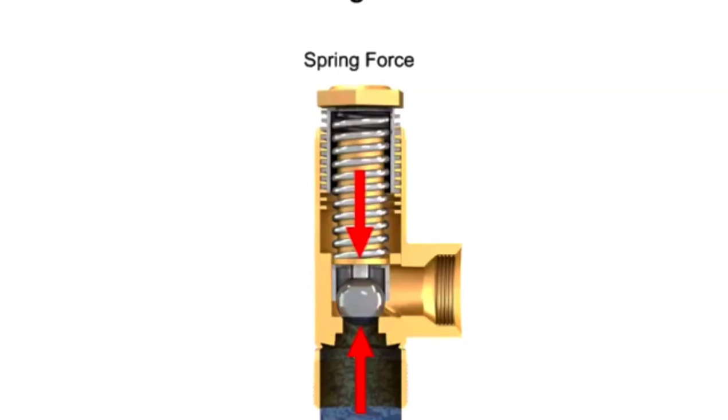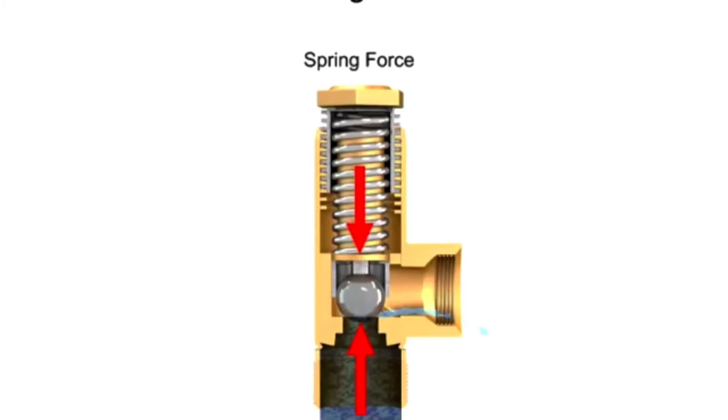As long as the system operates at a pressure at or under the cracking pressure, the valve remains closed. If the hydraulic pressure increases even a small amount beyond this level, the valve begins to open and fluid begins to trickle through.